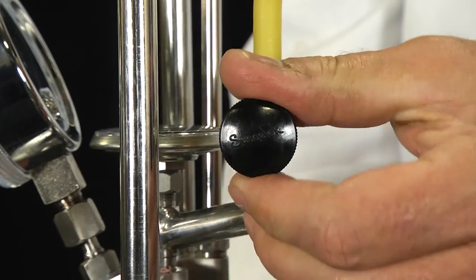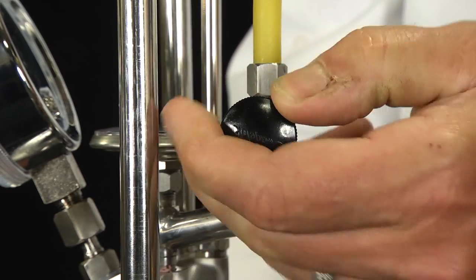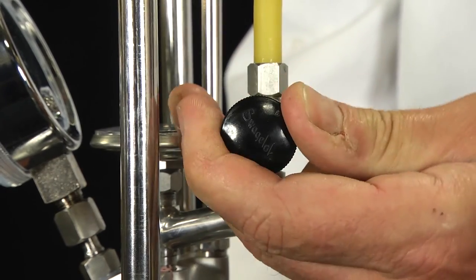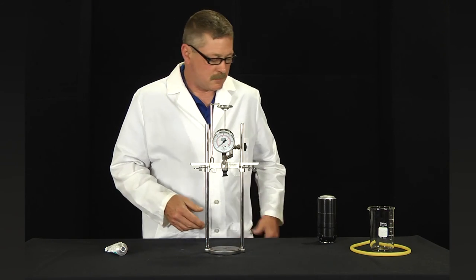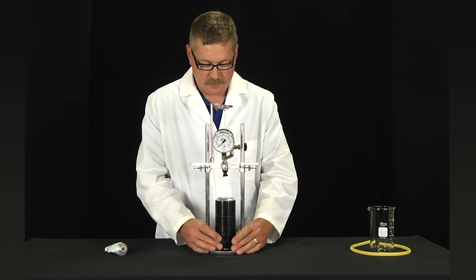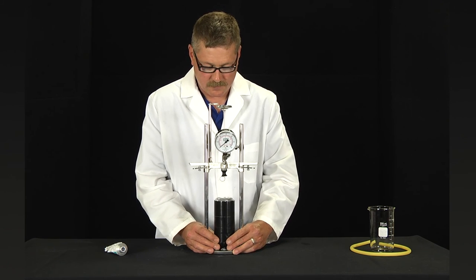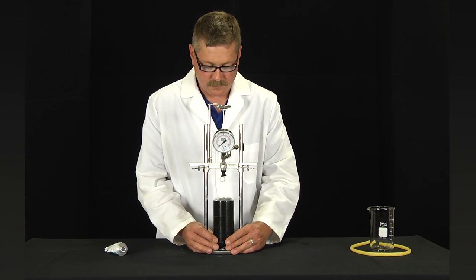Close the Whitey valve. Place the can to be tested upside down on the center of the base pad and position it so that the rubber seal will line up approximately to the center of the container.